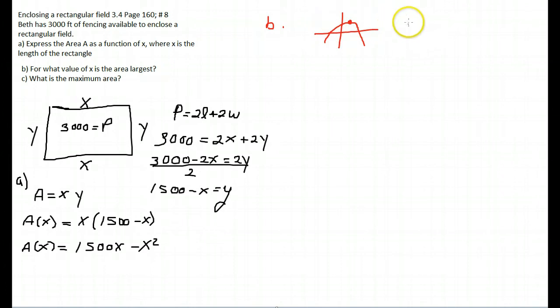For part B, we are to find the X coordinate of the vertex. So, we use the formula X equals negative B over 2A. Well, B is 1,500, and A is negative 1. So, X equals negative B, which is 1,500, over 2 times negative 1. In simplifying this, we get 750.